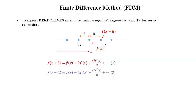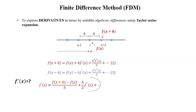Suppose we are interested in an algebraic expression for f'(x). Using equation 1, we can write: f'(x) = [f(x+h) − f(x)] / h + h/2 · f''(x) + higher order terms. If we consider only the first term and neglect the higher order terms, the resultant expression has a truncation error of order h.